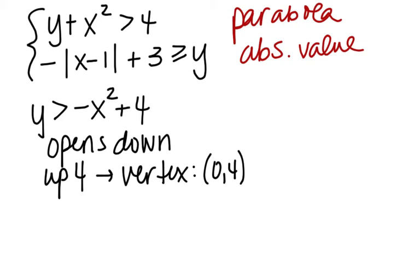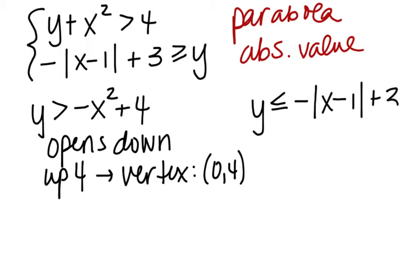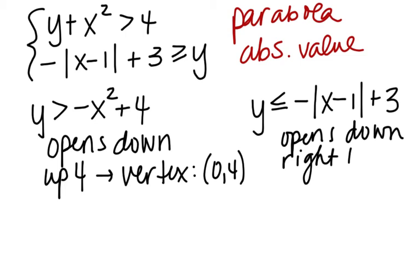Now look at the absolute value curve — we want y listed first, so let's rearrange this inequality. Right now we have the expression greater than or equal to y, so switching sides gives us y ≤ -|x - 1| + 3. This v also opens down, and in terms of shifting, it has a shift right 1 and up 3.